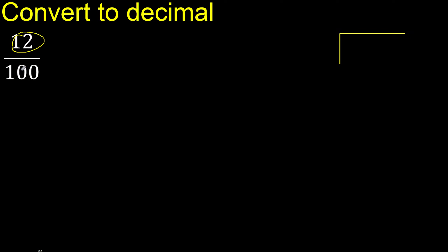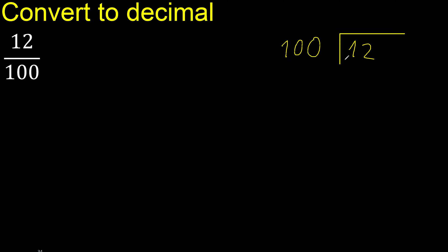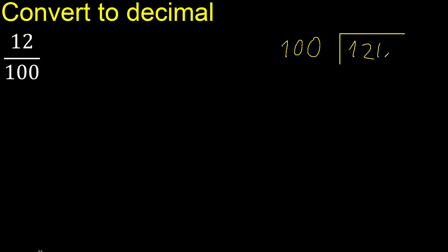12 divided by 100. 12 is less than 100, therefore complete — always complete with 0.